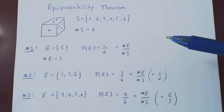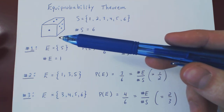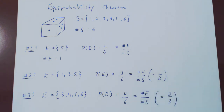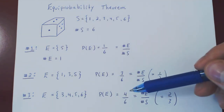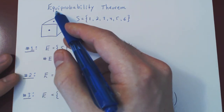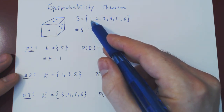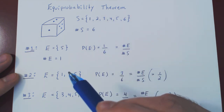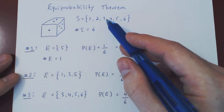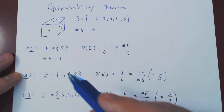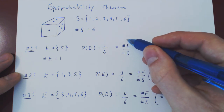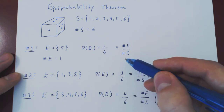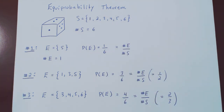No matter what the event was, we did the same thing intuitively: the probability of the event occurring is simply the number of possible outcomes in our event over the total number of possible outcomes of the experiment. This reasoning applies to any die — eight, nine, or twelve faces — as long as every outcome has an equal probability of occurring. That is where the prefix 'equi,' meaning equal, is important. Probabilities of this type boil down to simple counting problems when each outcome has the same likelihood. And that is the Equiprobability Theorem.